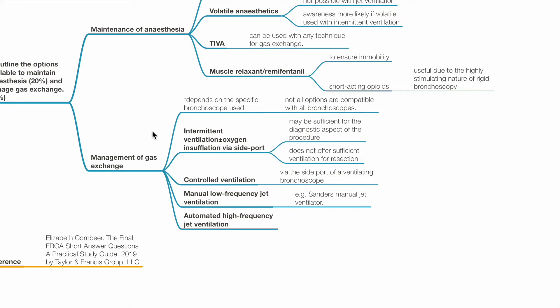Management of gas exchange depends on the specific bronchoscope used. Not all options are compatible with all bronchoscopes. Intermittent ventilation with or without oxygen insufflation via side port may be sufficient for the diagnostic aspect of the procedure but does not offer sufficient ventilation for resection.